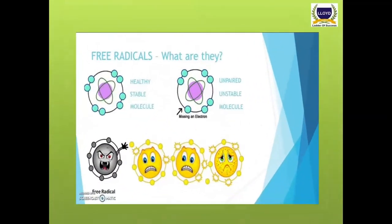Our body is under constant attack from oxidative stress. Once free radicals are formed, a chain reaction can occur: a free radical pulls an electron from a molecule, destabilizes it, and turns that molecule into a free radical. That molecule then takes an electron from another, destabilizing it in turn. This domino effect can eventually disrupt and damage the whole cell, proteins, and DNA.